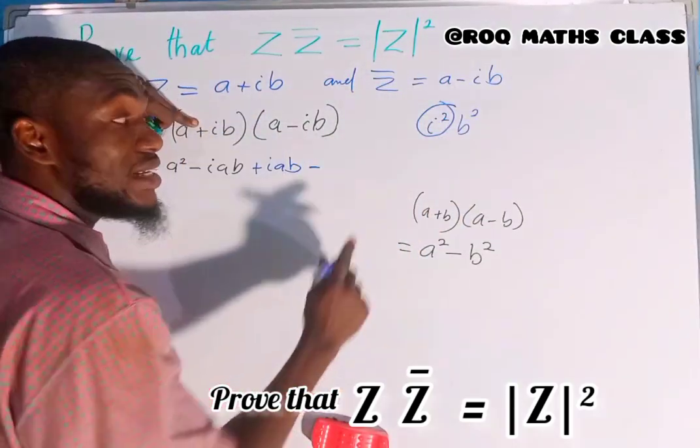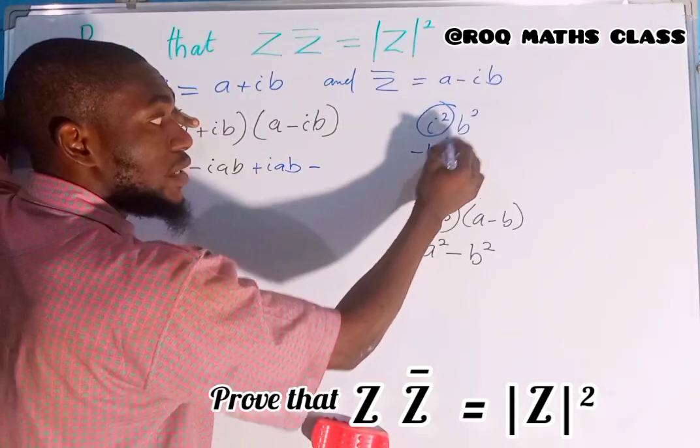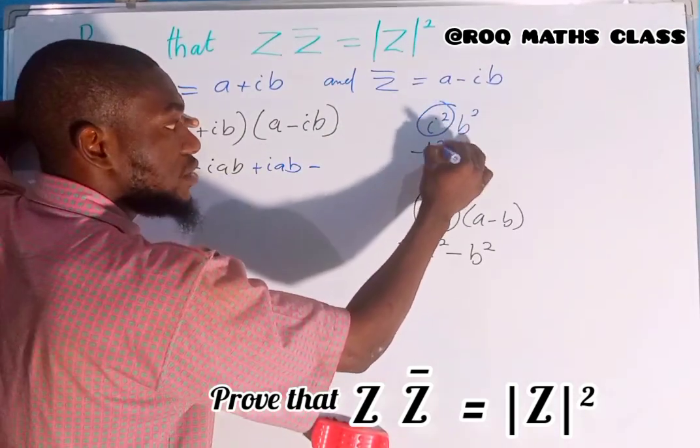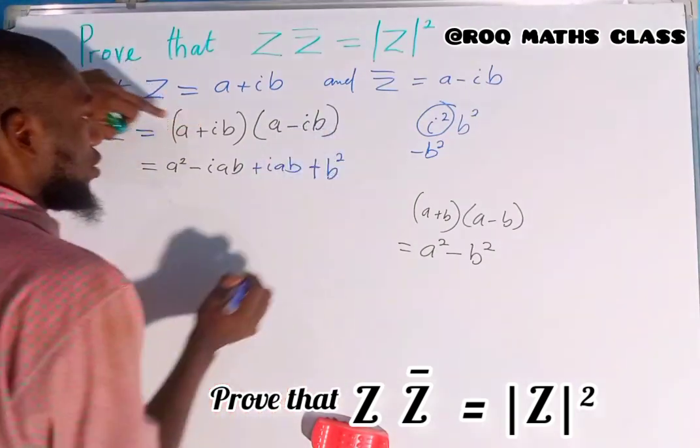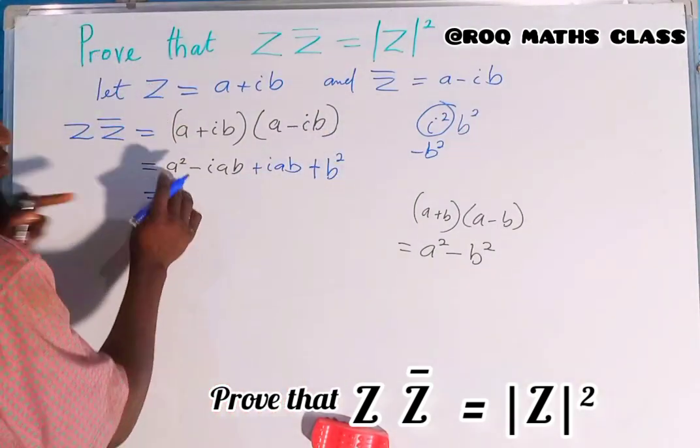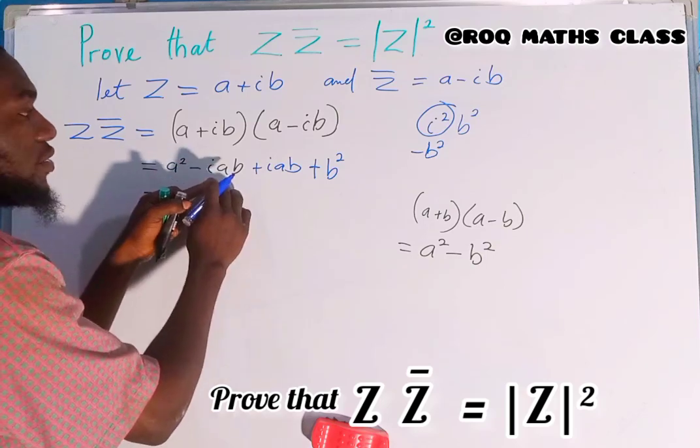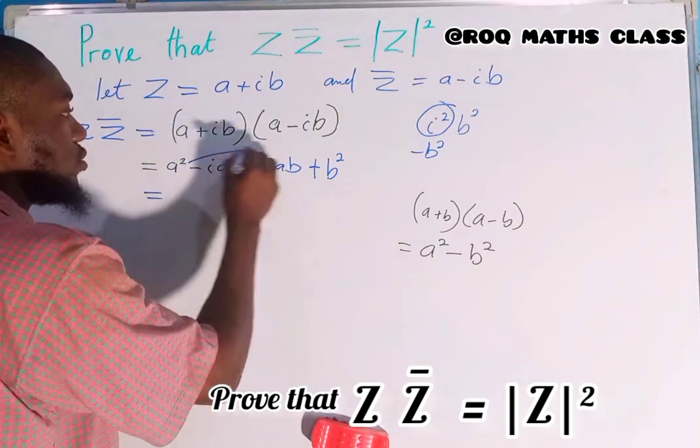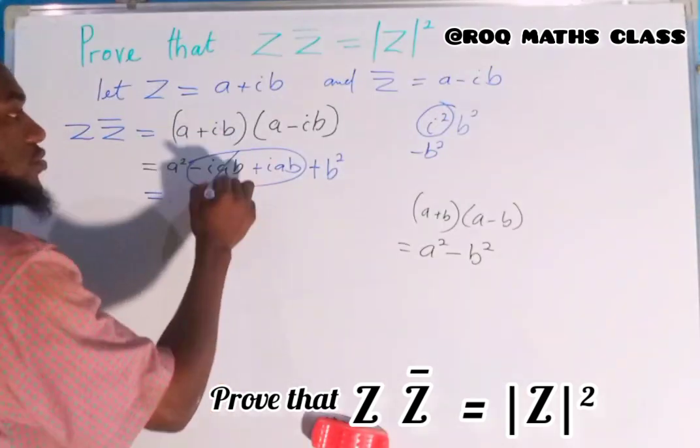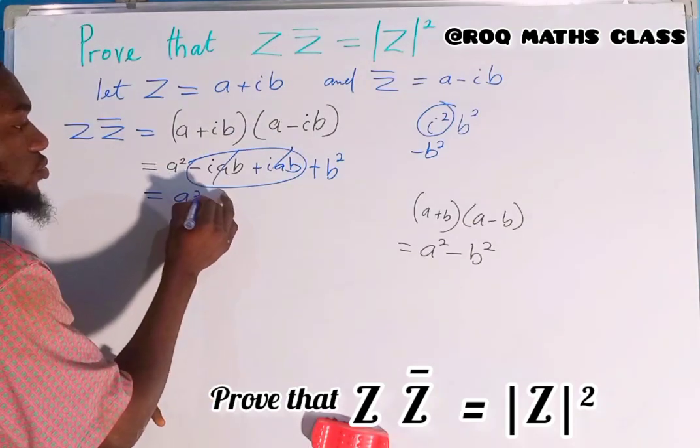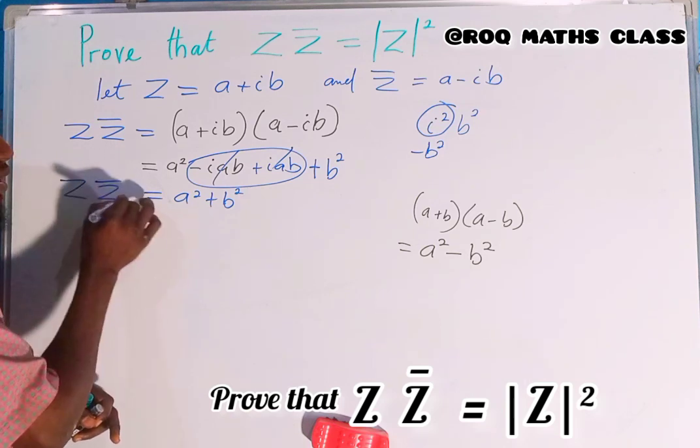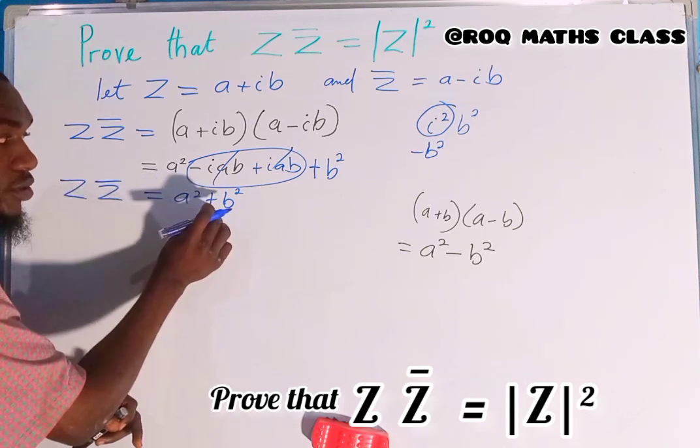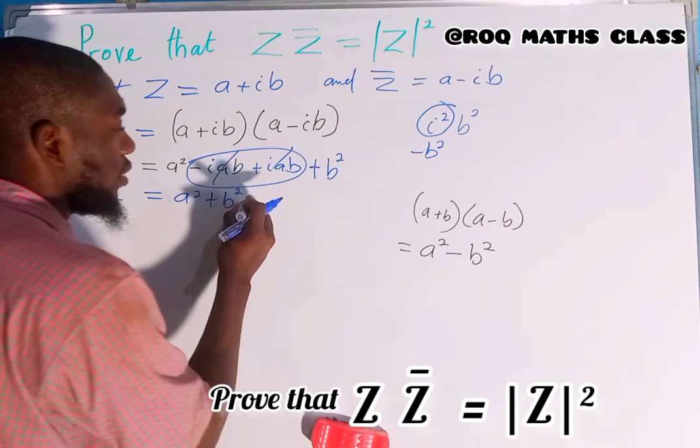So minus one times b² gives minus b². Minus times minus gives plus b². Therefore a² minus aib plus aib cancels out, giving a² plus b². Therefore Z multiplied by Z bar equals a² plus b². Let's call this equation one.